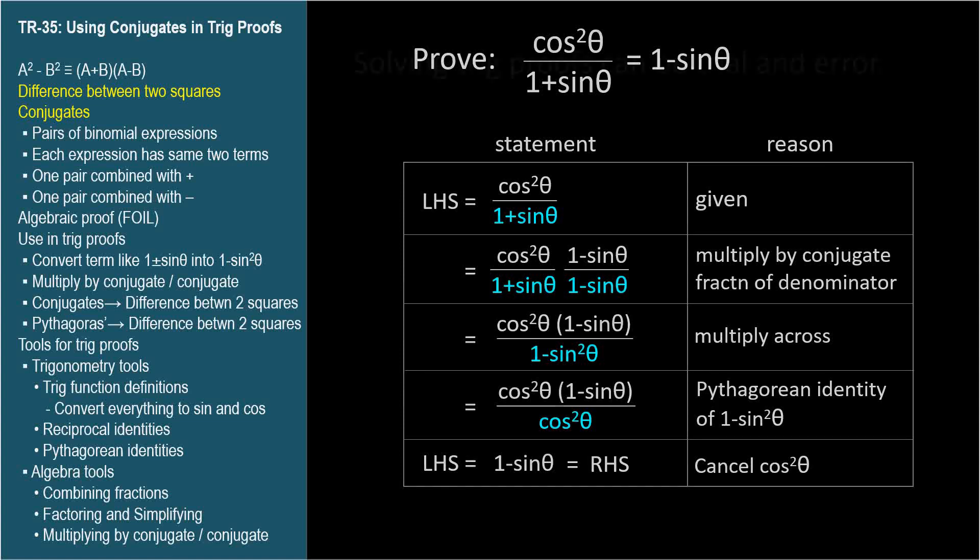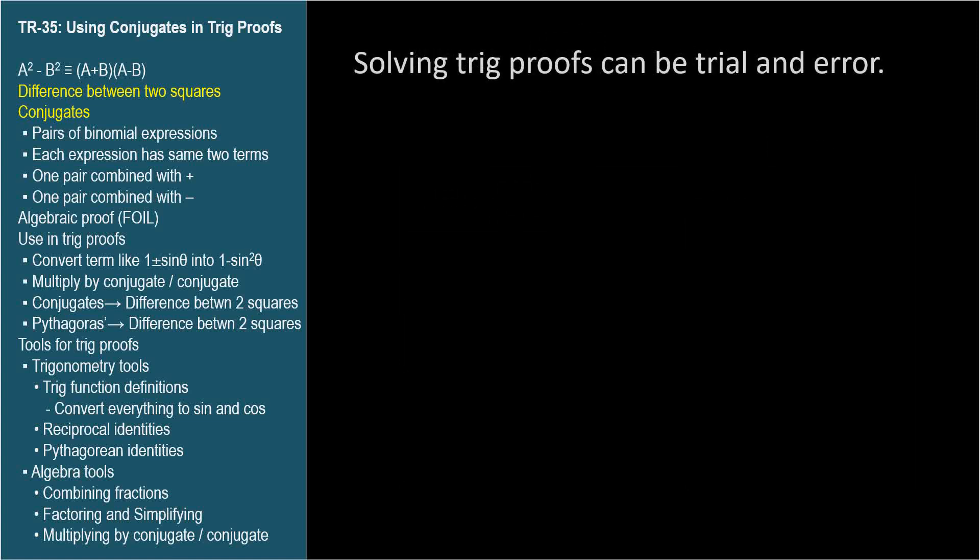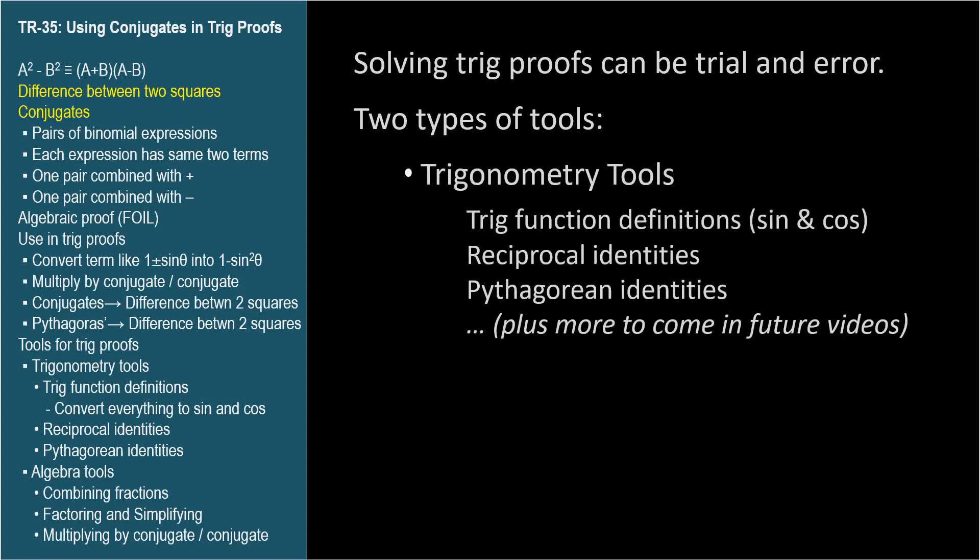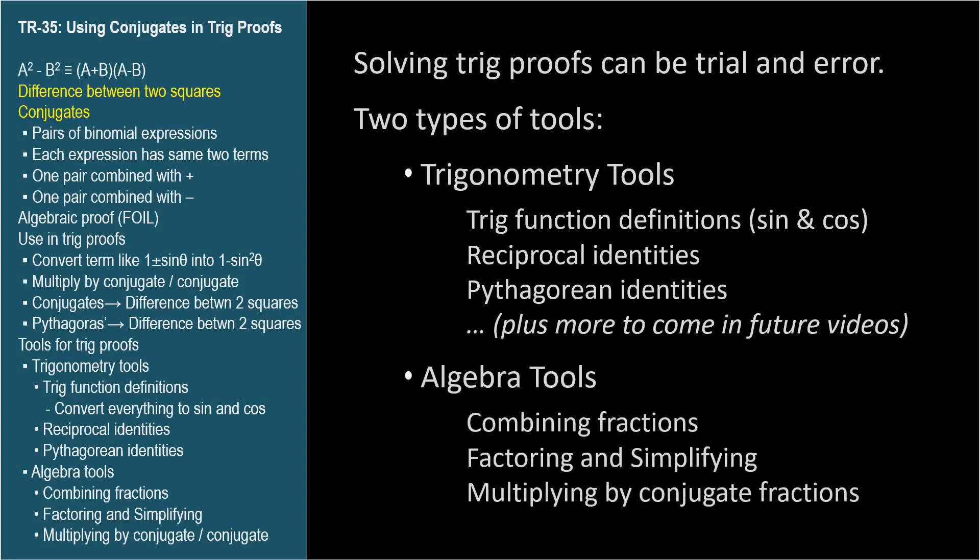There's not one surefire method to prove trig identities. Sometimes your first approach won't lead anywhere, so try again with a different tactic. The strategy is to simplify and manipulate one side using two types of tools. First are the trig tools, such as trig function definitions in terms of cosine and sine, reciprocal identities, and Pythagorean identities. Second, and please don't forget, are algebra tools, such as combining fractions with common denominators, factoring, simplifying, and multiplying by conjugate fractions.